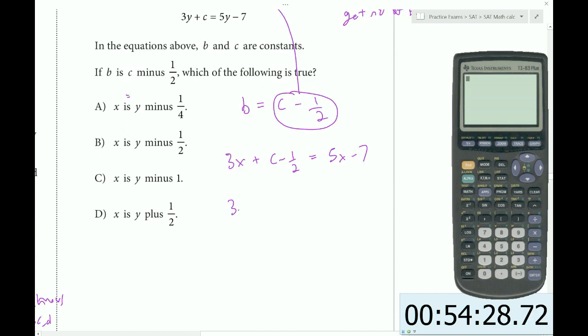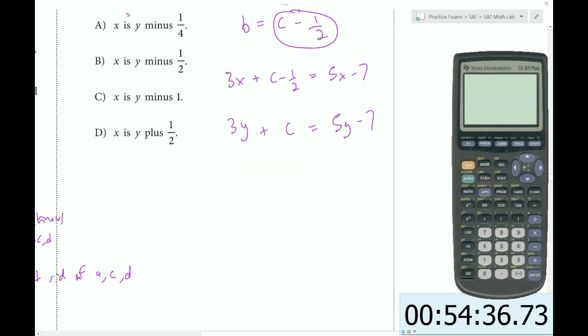So we get 3x plus c minus 1 half equals 5x minus 7. And I have 3y plus c equals 5y minus 7. At this point, I will negate this entire bottom equation, and now I will add the lines.